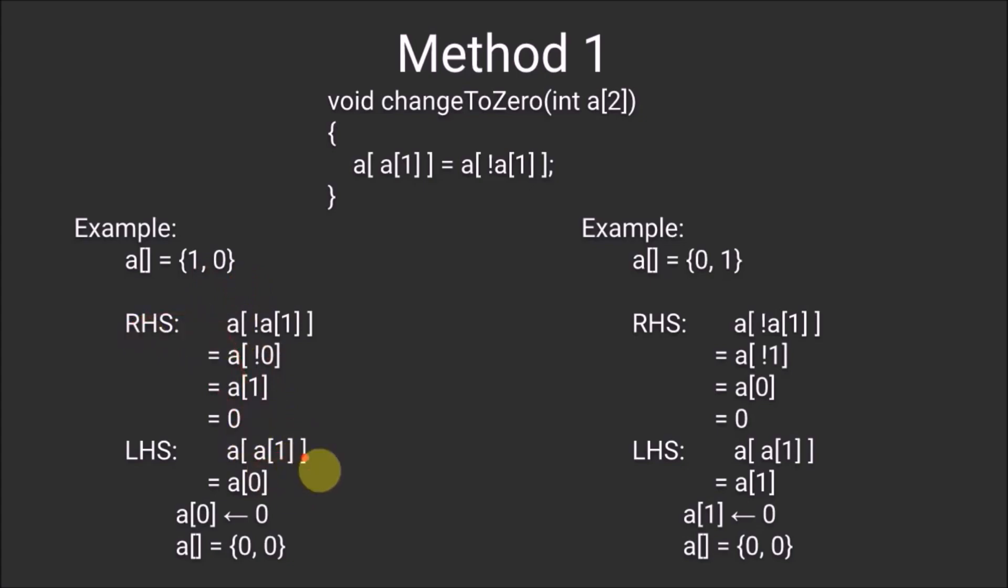At LHS, we have A[1] which is 0. Therefore, we have A[0]. Now, finally, we assign RHS to LHS. So, 0 is assigned to the 0th index of the array and the array will become 0, 0.